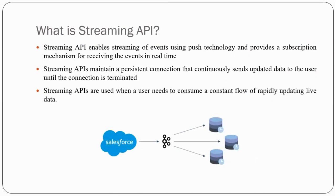What is Streaming API? As we know, we have lots of APIs in Salesforce — we have REST API, we have SOAP API — all used for different purposes. Similarly, Streaming API is used to send and receive event notifications in real time. It enables streaming of event notifications using push technology and provides a subscription mechanism for receiving events in real time. We can send and receive event notifications within Salesforce, or from Salesforce to an external app, or from an external application to Salesforce.